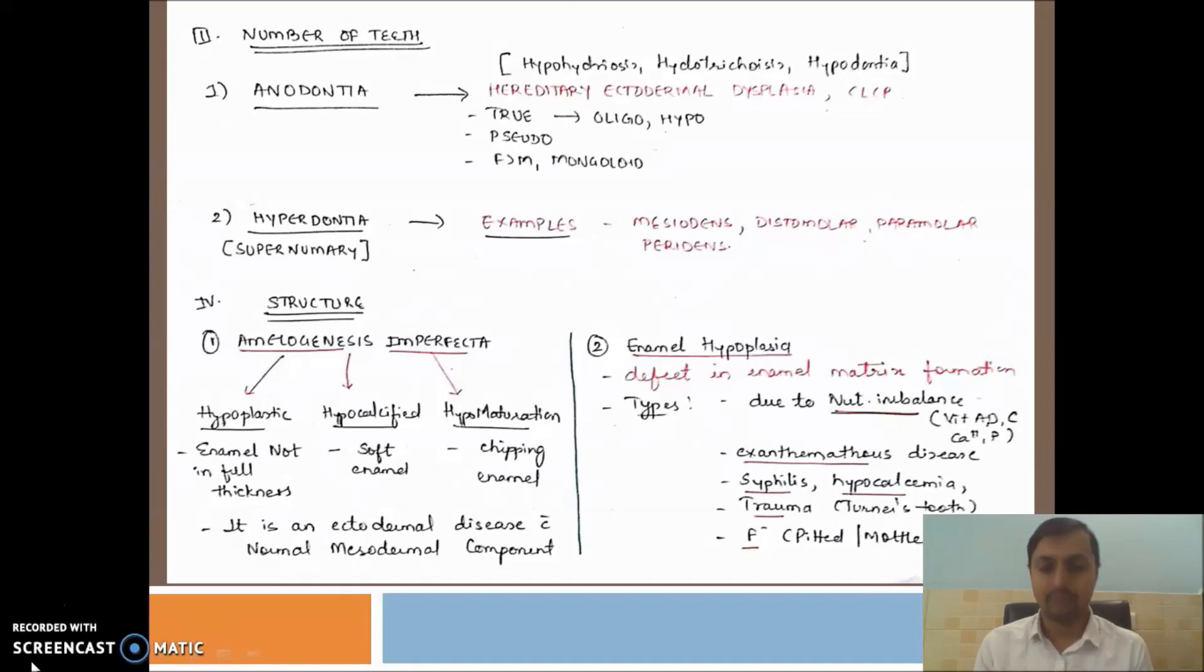First, we will deal with amelogenesis imperfecta. It is of three types: hypoplastic type, hypocalcified type, and hypomaturation type. I will explain in detail in the following slides with the help of pictures, how these three variants look different from each other. Remember, amelogenesis imperfecta is an ectodermal disease with a normal mesodermal component.